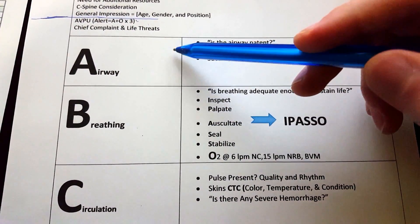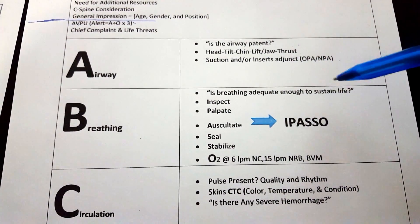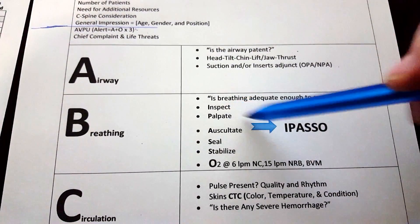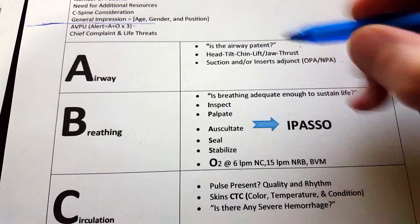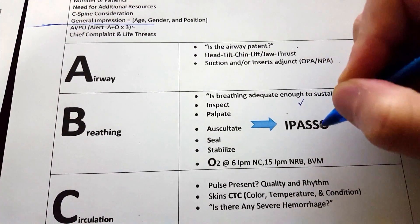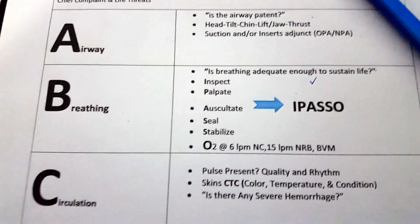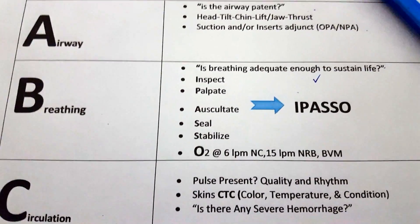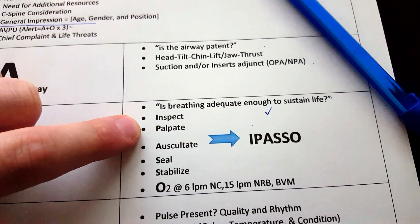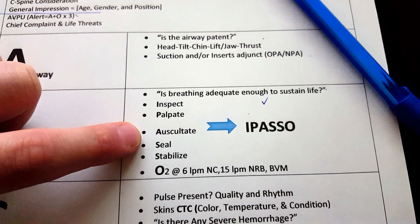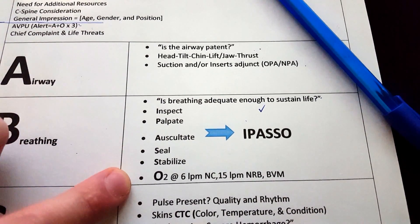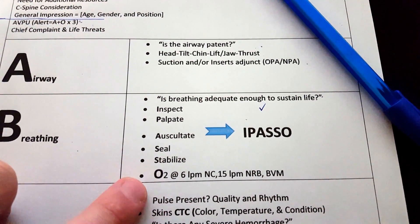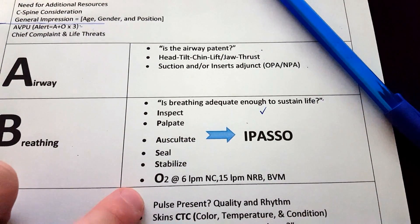Next, breathing. Identify that your patient has a patent airway, then ask: are they breathing adequately enough to sustain life? Use I-PASO — inspect, palpate, auscultate, seal or stabilize, and give O2. Ask the proctor if you see any abnormalities, seesaw movement, bruising, or anything abnormal. Palpate for crepitus on the chest, then auscultate with your stethoscope — do you hear wheezing or crackles? Is there anything to seal or stabilize? Do not forget to give O2. If you do not give O2 on the NREMT, you will fail the skill.